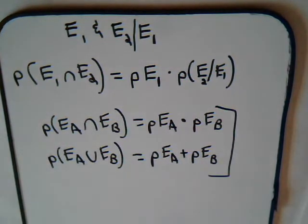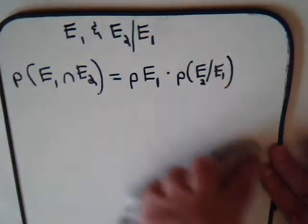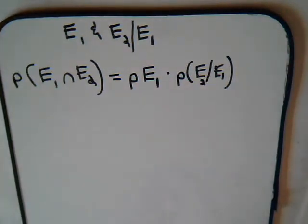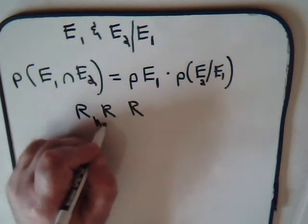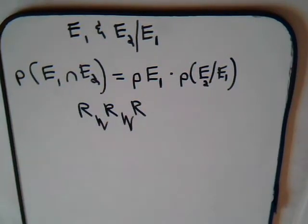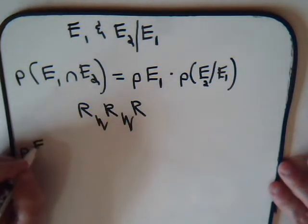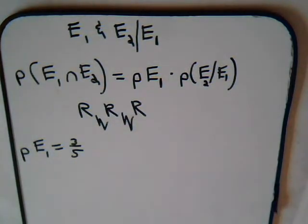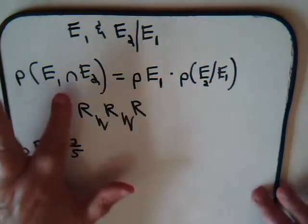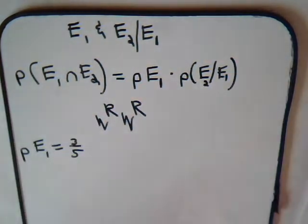Let's consider our problem. The container had three red balls and two white balls. If we reach in and select a ball, the probability of selecting a red ball is clearly three-fifths — there are three red balls out of a total of five. So the probability of E1 is three-fifths. Once that happens, we've gone to the container, randomly selected a ball, removed it, and it happened to be a red ball. We've now changed the composition of the container.